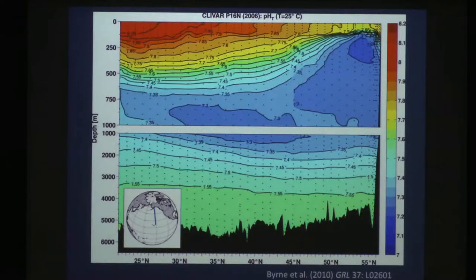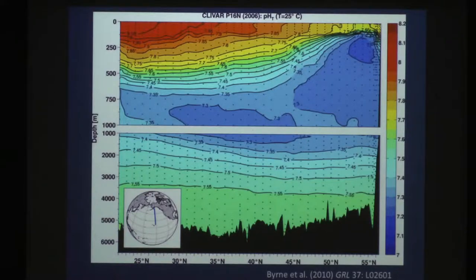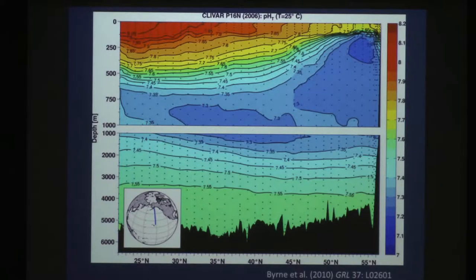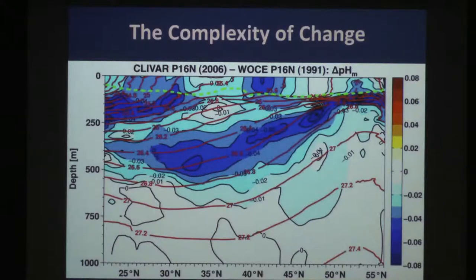Back in about 1991 we conducted a survey between Hawaii and Kodiak, Alaska, from below 25°N up to above 55°N — each dot is a manual pH measurement. We repeated this in 2006. The measurements are so precise that you can take differences between the two surveys and plot them, showing that pretty much all of the pH changes are confined to the upper 600 meters.